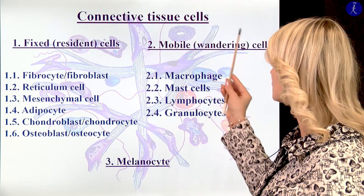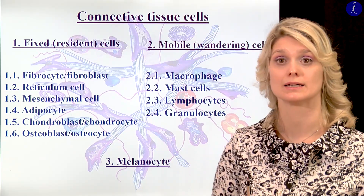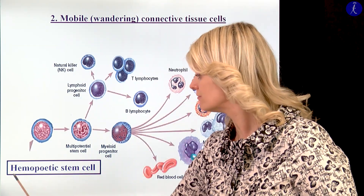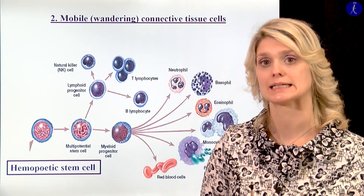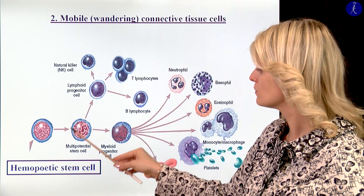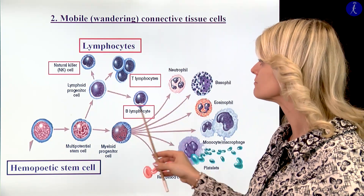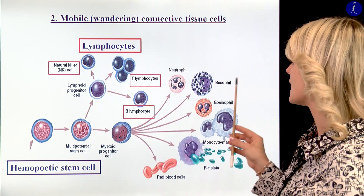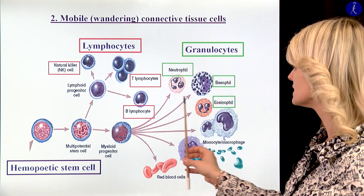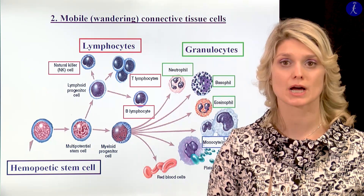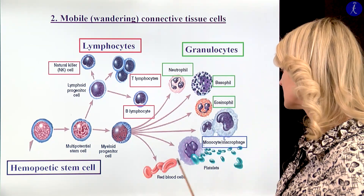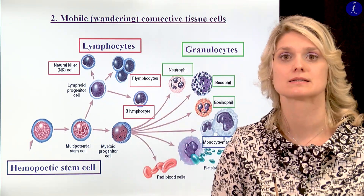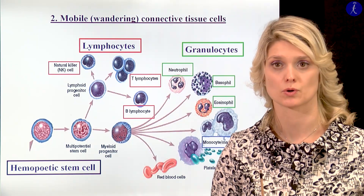Let's see now the next group: the group of the mobile cells. I told you that we have another stem cell group: the hemopoietic stem cells. From these hemopoietic stem cells will develop the lymphocytes — one type of the white blood cells — and the granulocytes. From this will also develop the special monocytes, macrophages, and the platelets and red blood cells too. Those are the mobile cells of the connective tissue.